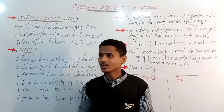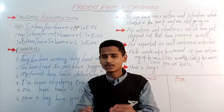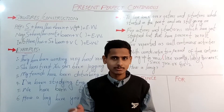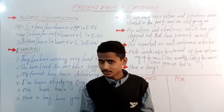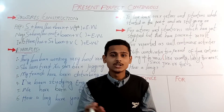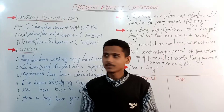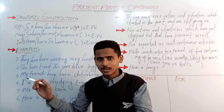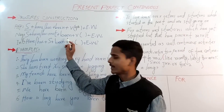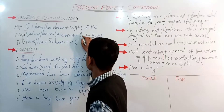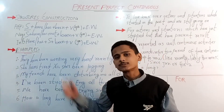If the subject is he, she, it, or any singular name, you put 'has'. For all other subjects, you put 'have', plus 'not' to show negation. If you've watched our previous lessons on present simple, past simple, future simple, and other continuous and perfect tenses, you already know why we put 'not'. Then comes 'been' plus the verb in fourth form.